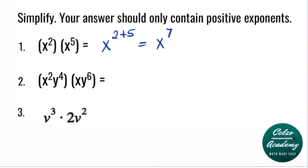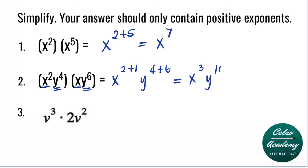Question number two: x squared y to the fourth times x y to the sixth power. For number two, we have the variable x and the variable y, so we need to apply the product rule for each variable. For x, we have x squared times x, which means x to the first power, giving x to the power of 2 plus 1. For y, we have y to the fourth and y to the sixth, giving y to the fourth plus 6. Simplifying, the answer is x cubed y to the 10.